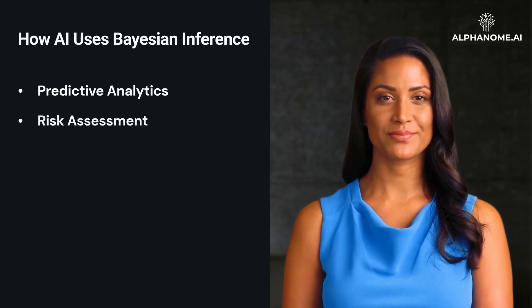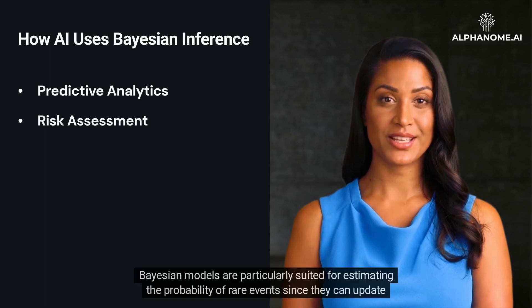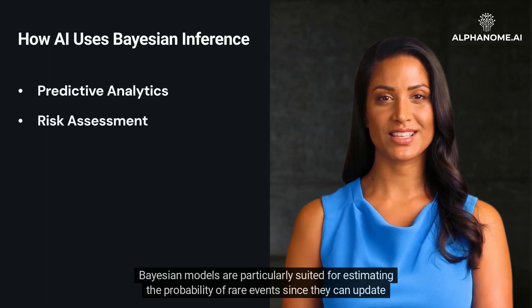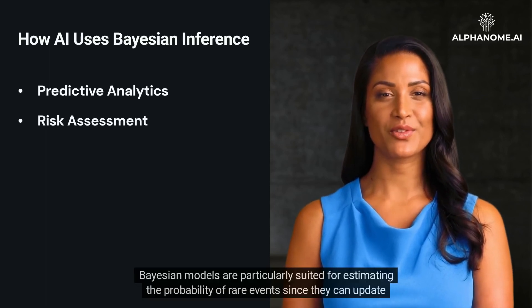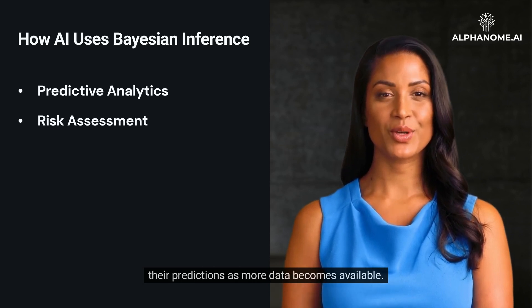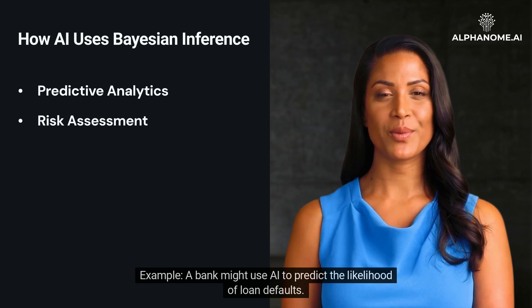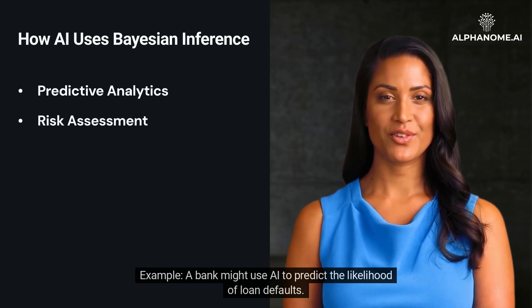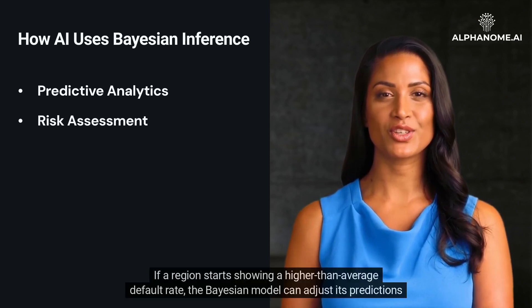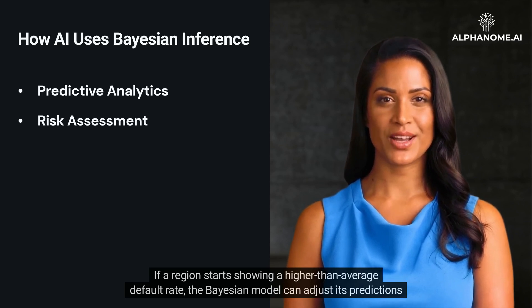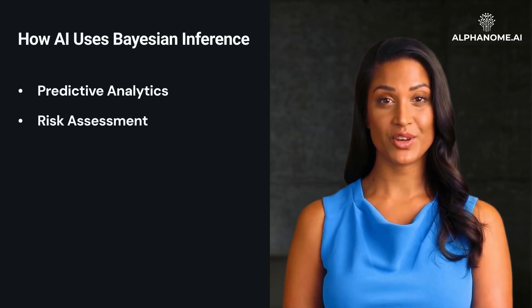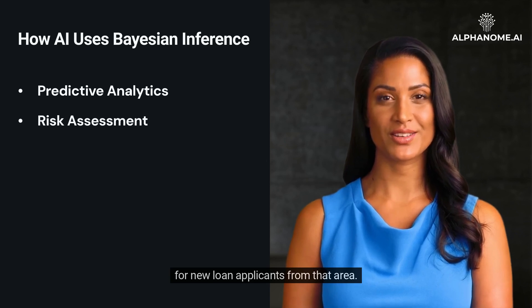Bayesian models are particularly suited for estimating the probability of rare events since they can update their predictions as more data becomes available. For example, a bank might use AI to predict the likelihood of loan defaults. If a region starts showing a higher-than-average default rate, the Bayesian model can adjust its predictions for new loan applicants from that area.